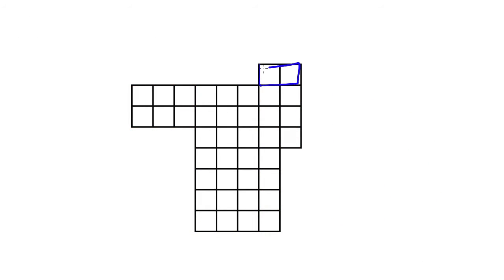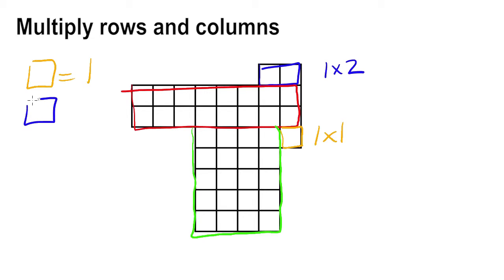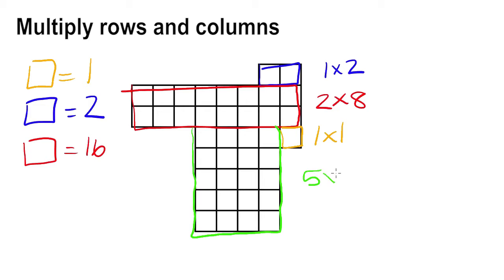Let's try one more way to separate this rectilinear figure into smaller rectangles. To determine the area, I will multiply rows and columns. The orange rectangle is 1 times 1, or 1. The blue rectangle is 1 times 2, or 2. The red rectangle is 2 times 8, or 16. The green rectangle is 5 times 4, or 20. When we add up the areas, we get a sum of 39. The area of the entire rectilinear figure equals 39.